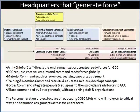By way of background, the Command and General Staff College is one of four primary educational institutions in the Army. It instructs all Army majors in campaign operations and planning and large unit management. It falls underneath the Training and Doctrine Command, which is responsible for all Army recruitment, training and education, the development of doctrine and concepts, and the management of all schools.